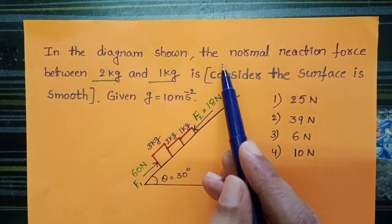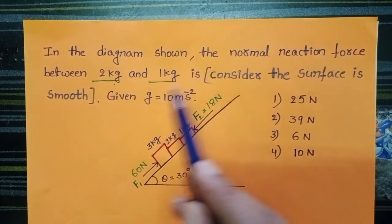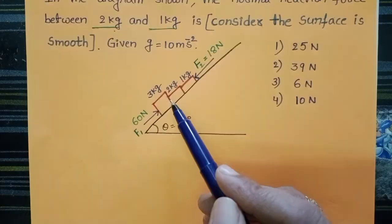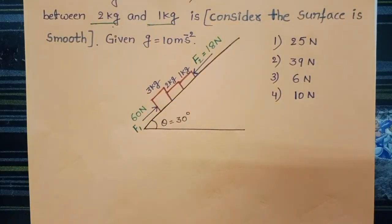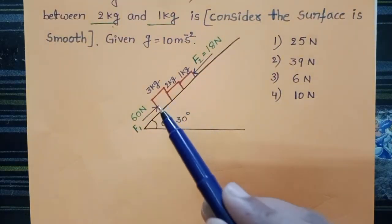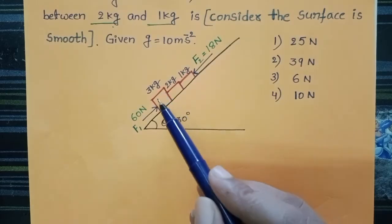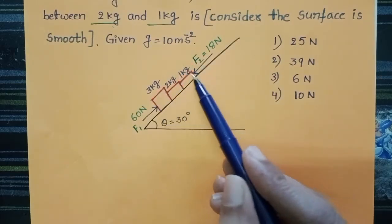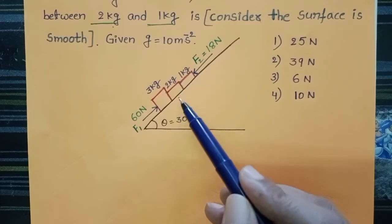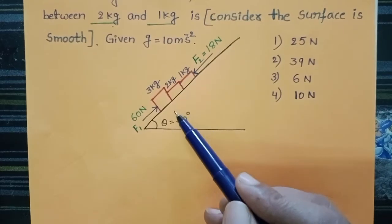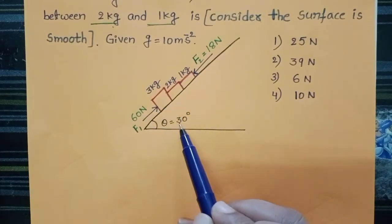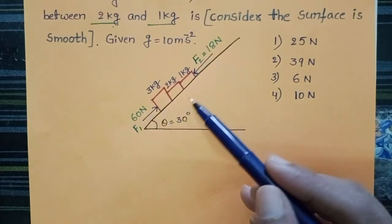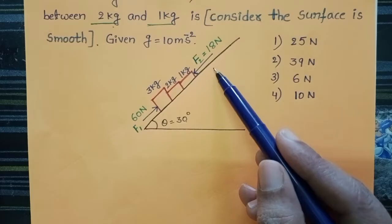In the diagram shown, the normal reaction force between 2kg and 1kg is to be found. Observe the diagram. Three masses — 3kg, 2kg, and 1kg — are located on the inclined surface. The angle of inclination is 30 degrees. There are no frictional forces acting on the inclined surface.